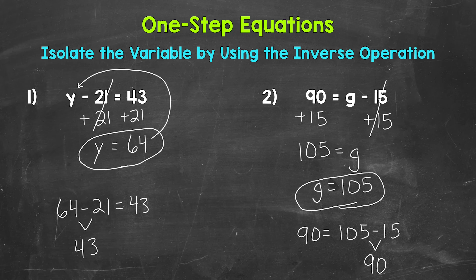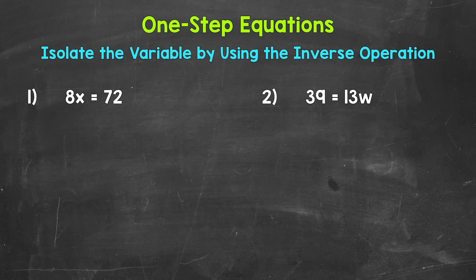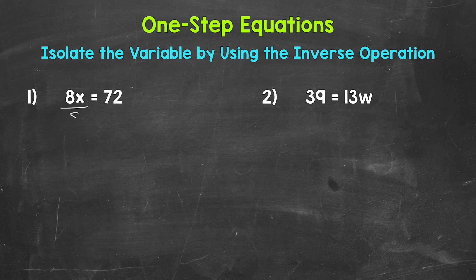So that's how we solve one-step subtraction equations. Let's move on to multiplication. Here are our examples of one-step multiplication equations. Let's jump into number one where we have 8x equals 72. Now we have a number next to a variable. That means we are multiplying. So this is 8 times x equals 72. Anytime you see a number next to a variable, that is multiplication. So something to keep in mind. Now we need to isolate that variable of x. Since x is being multiplied by 8, we need to undo that multiplication by using the inverse operation, so the opposite operation. The opposite of multiplication is division. So let's divide the left side of the equation by 8. Now whatever we do to one side of the equation, we must do to the other in order to keep it balanced and equal. So let's divide the right side by 8 as well.